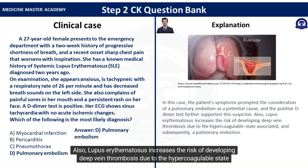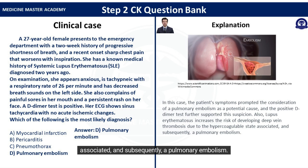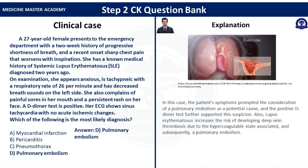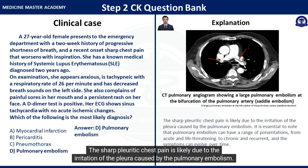Also, lupus erythematosus increases the risk of developing deep vein thrombosis due to the hypercoagulable state associated, and subsequently, a pulmonary embolism. The sharp pleuritic chest pain is likely due to the irritation of the pleura caused by the pulmonary embolism.